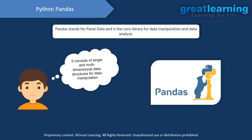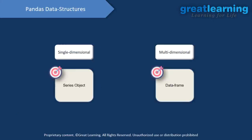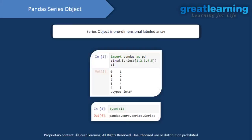That was NumPy. Now we'll head on to our next important library, Pandas, which stands for Panel Data. It is the core library for data manipulation. Just as NumPy provided arrays, Pandas provides different data structures: Series and DataFrames. The single-dimensional object is known as the Series and the multi-dimensional object is known as the DataFrame.